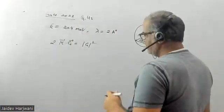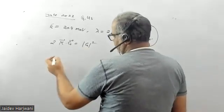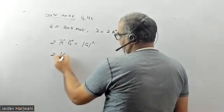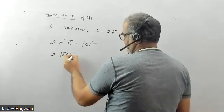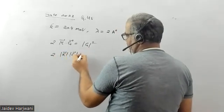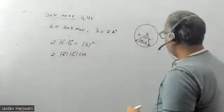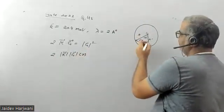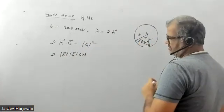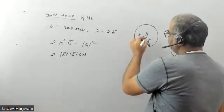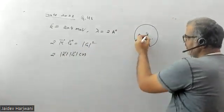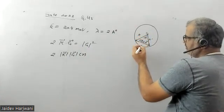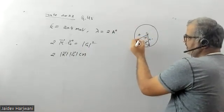If we solve this, it gives 2K magnitude of G cosine theta. Now, the angle between K, the incoming wave, and the reciprocal lattice G is 90 minus theta. If you put the perpendicular here, this gives 90, this is theta, theta, and this will be 90 minus theta.